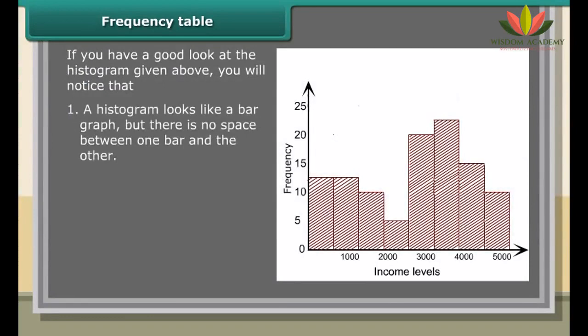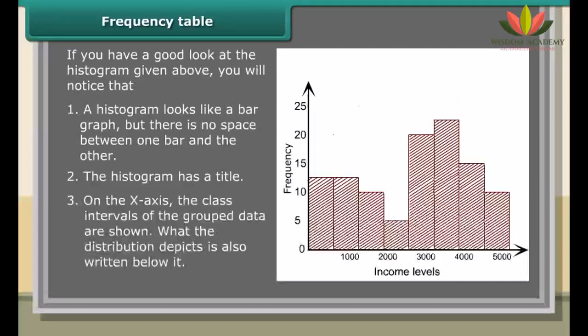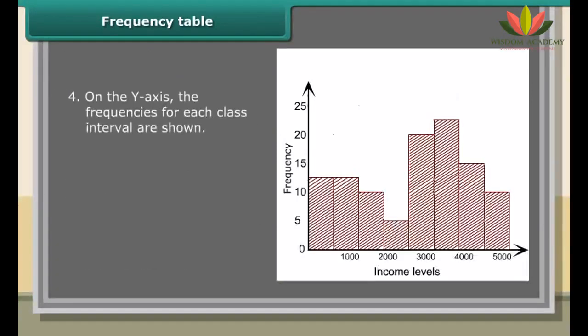Non-overlapping intervals like 0 to 19, 20 to 39, 40 to 59 are so-called since the upper limit of the previous class and the lower limit of the next one are different. This kind of class interval is only useful for discrete data.